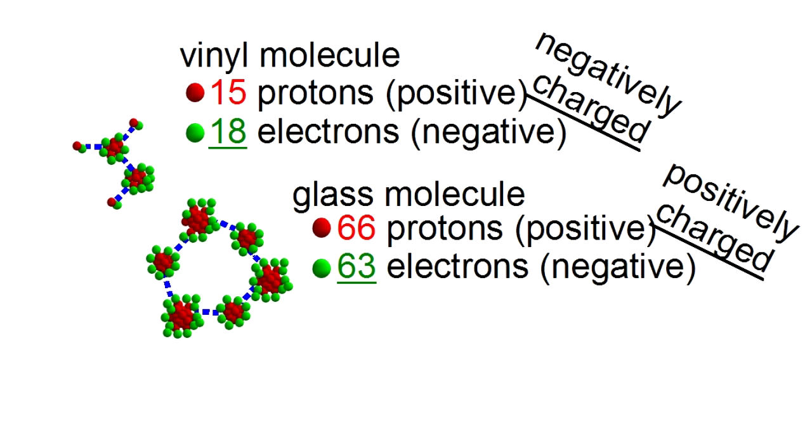And if we then move the molecules apart again, the electrons don't go back to where they were. The vinyl stays negatively charged, and the glass stays positively charged.